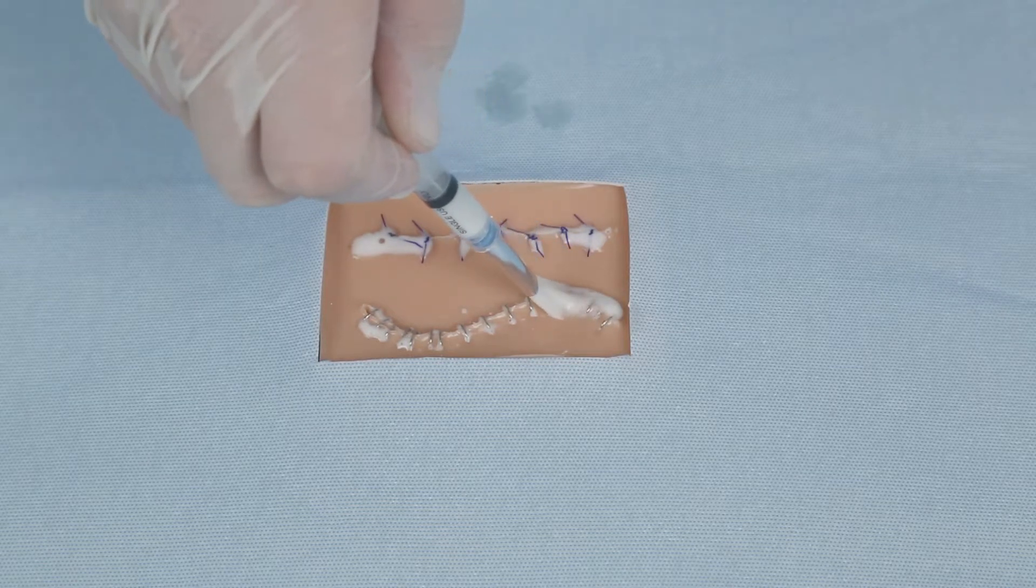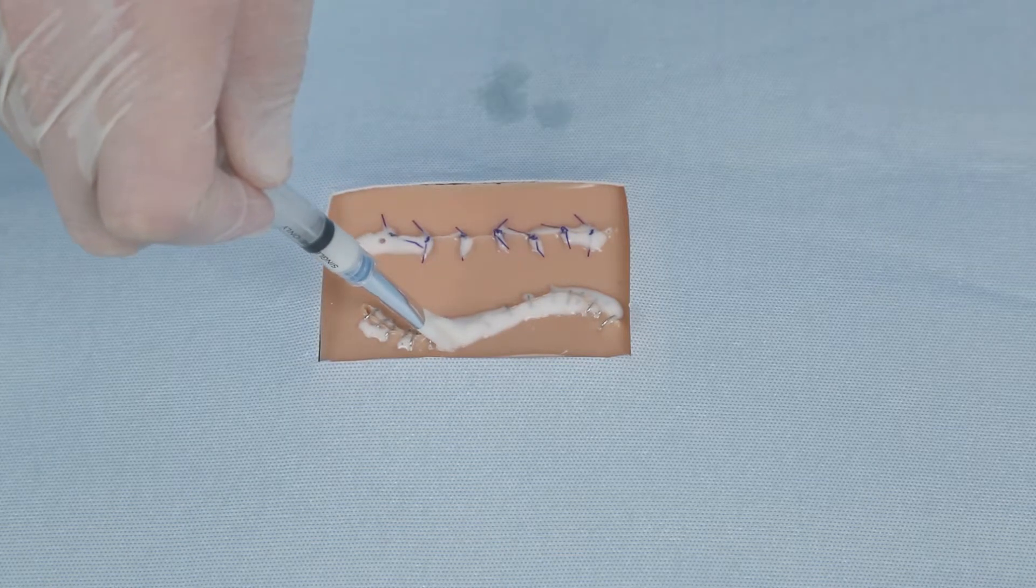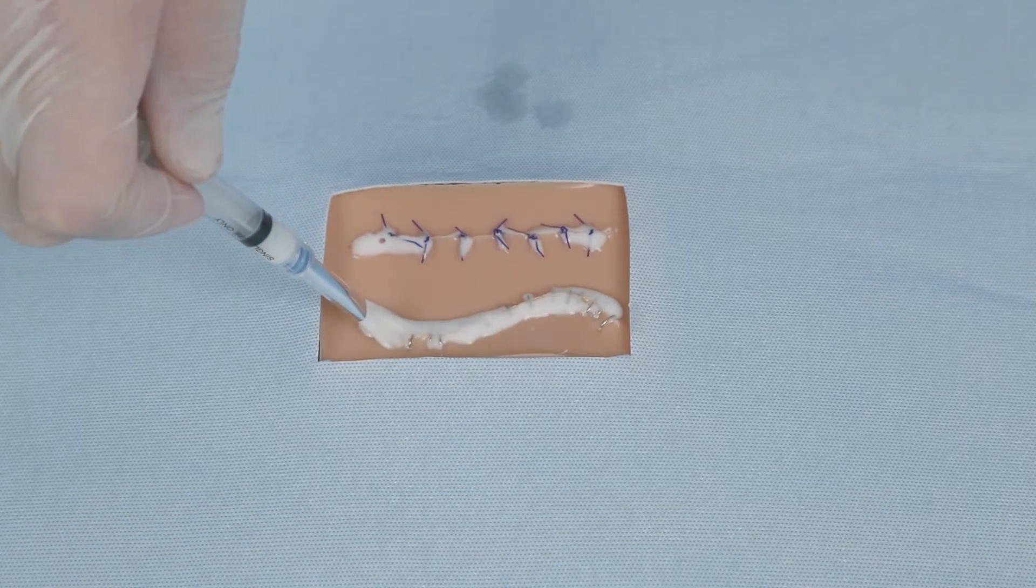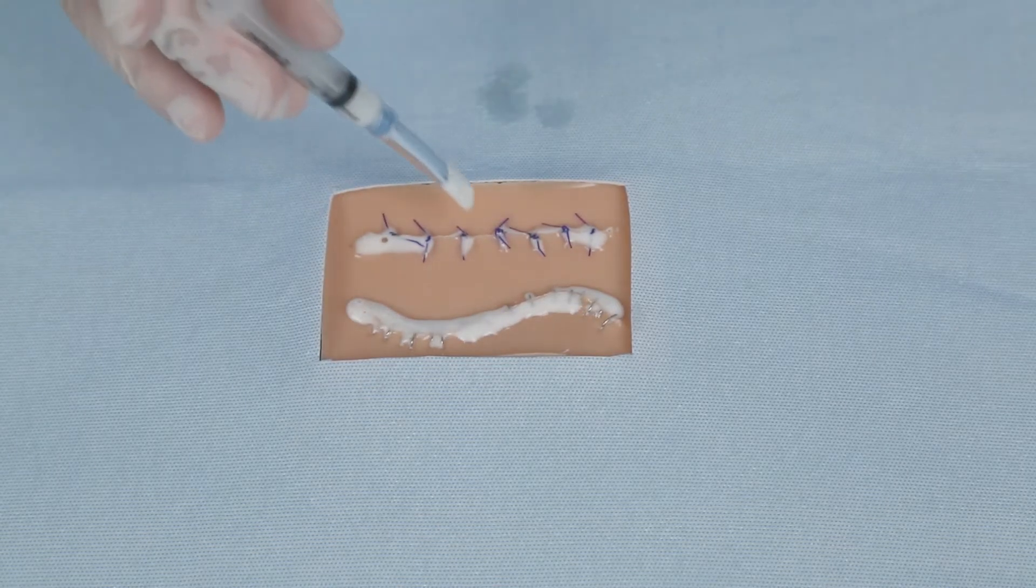Suture Seal will remain on the suture or wound area for approximately 14 days and will biodegrade away slowly. Apply a second application of Suture Seal if the suture or wound is not completely healed after 14 days.